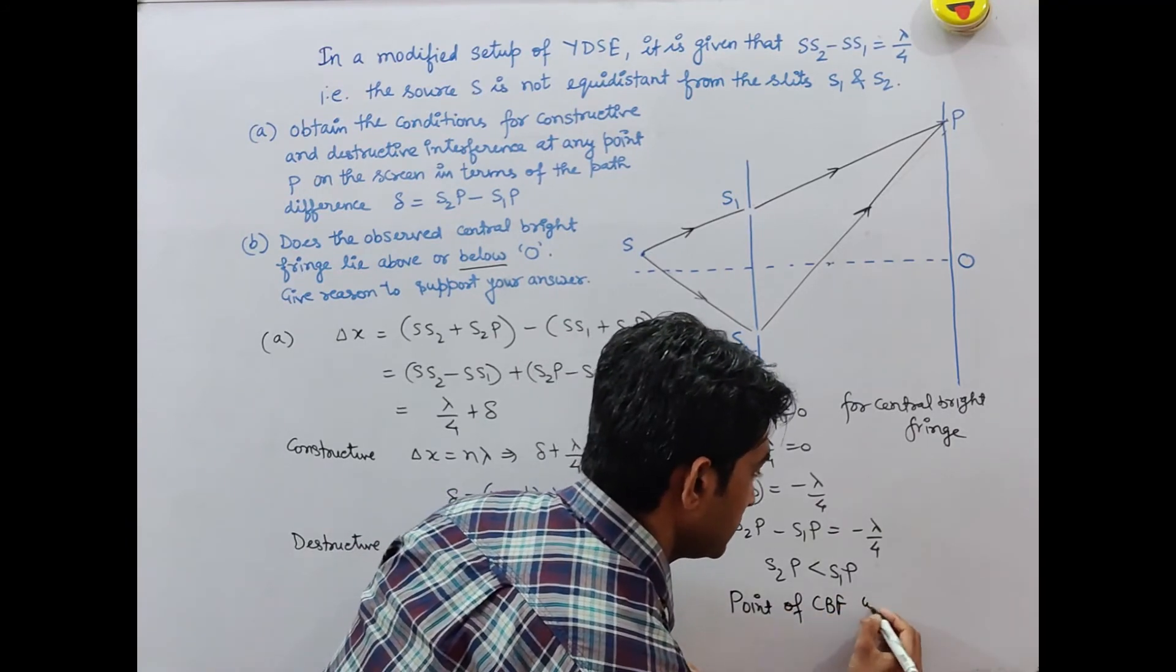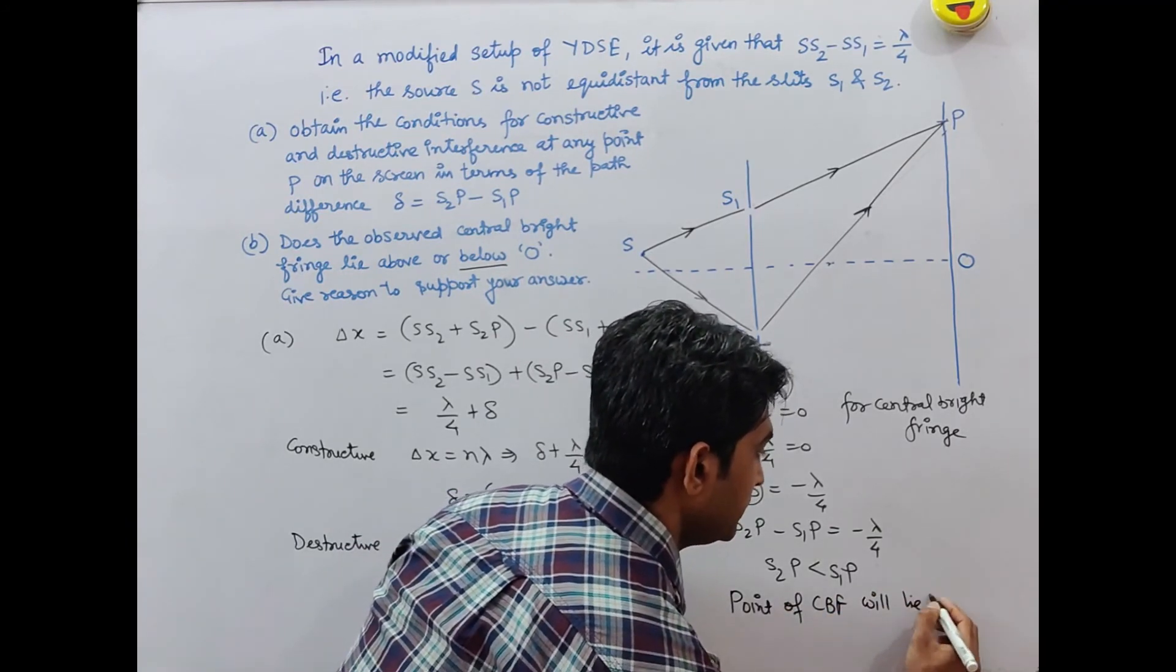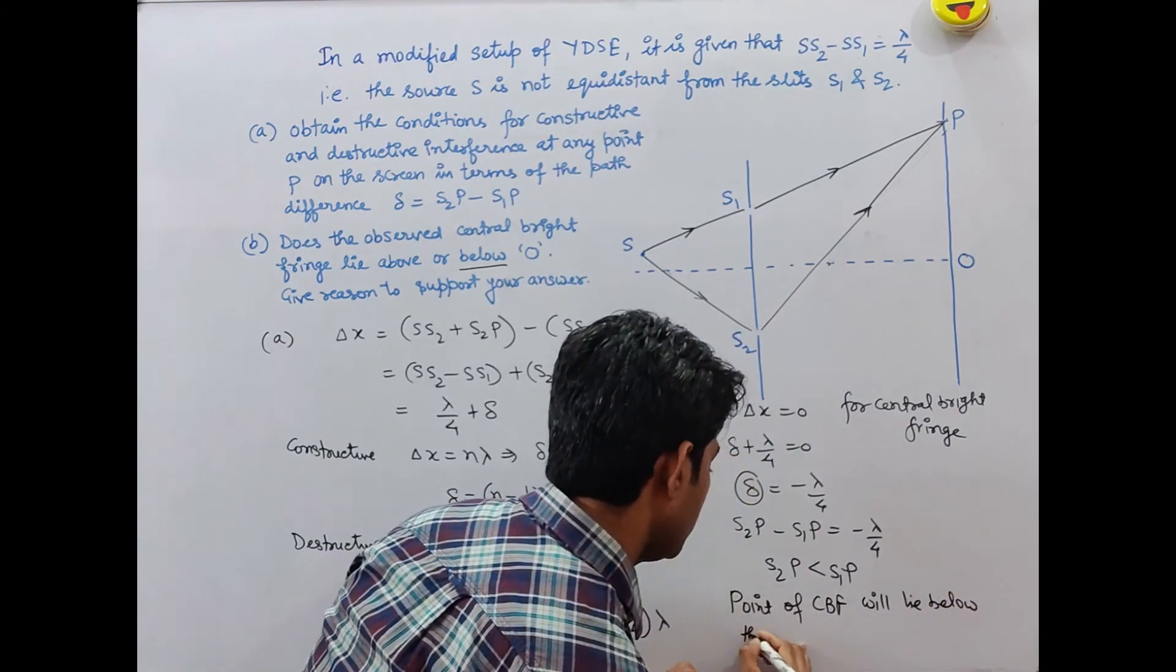Therefore, the central bright fringe will lie below the point O.